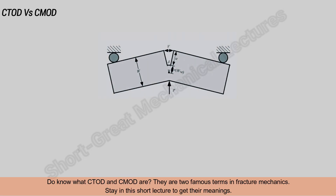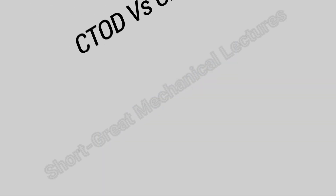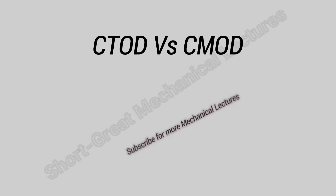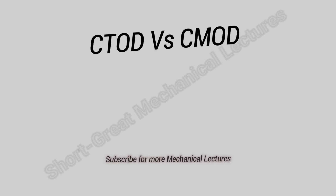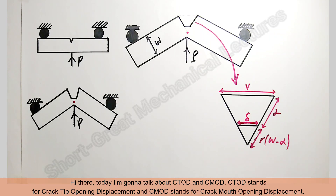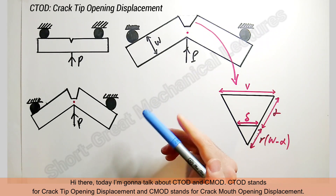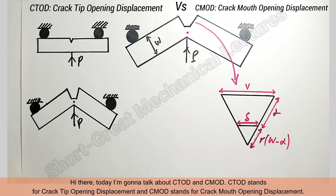Do you know what CT-OD and CM-OD are? They are two famous terms in fracture mechanics. Stay in this short lecture to get their meanings. Today I'm going to talk about CT-OD and CM-OD. CT-OD stands for crack tip opening displacement and CM-OD stands for crack mouth opening displacement.